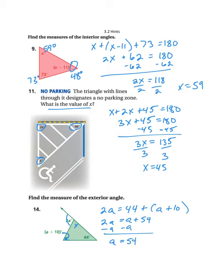Now it didn't ask me to solve for a though, it asked me to find the measure of the exterior angle. So this angle, let me erase my little mark there, this angle right here, this exterior angle is 2a, so we need to do 2 times 54, so 108 degrees.